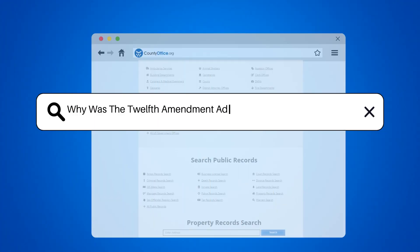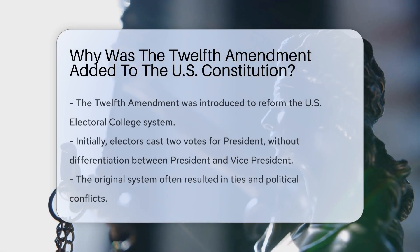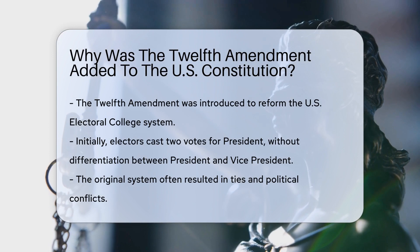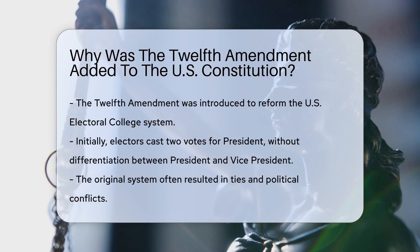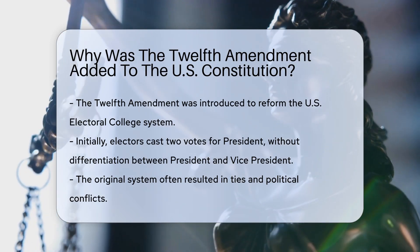Why was the 12th Amendment added to the U.S. Constitution? The 12th Amendment was added to the U.S. Constitution to address issues with the original Electoral College system.